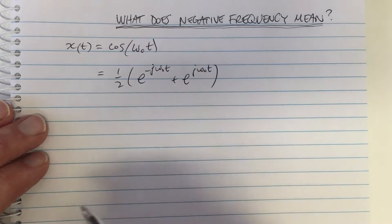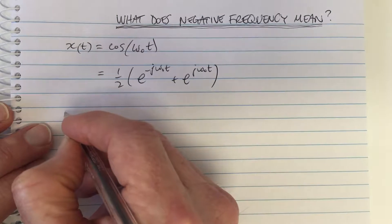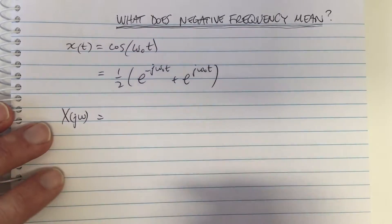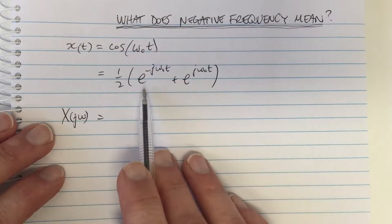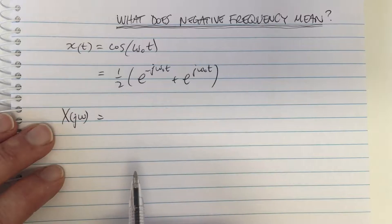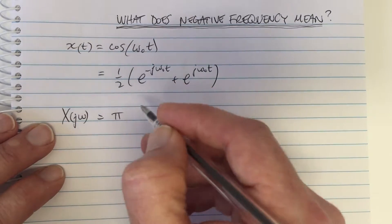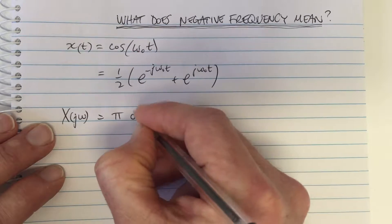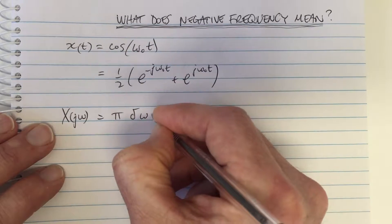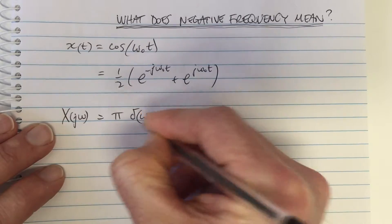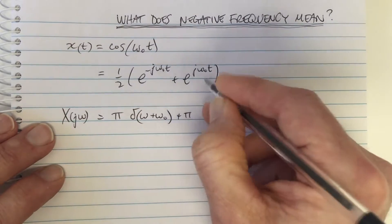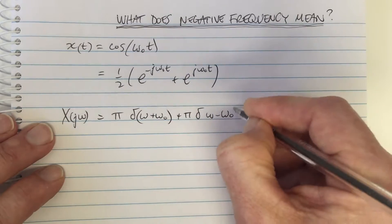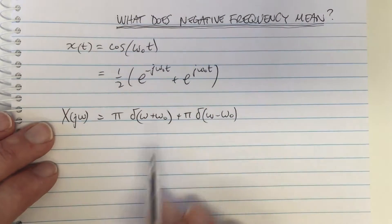And you can look up Fourier transform tables to find out that the Fourier transform of this waveform has two terms, and they correspond to these two complex exponentials. And it equals pi, and corresponding to this one here is delta of omega plus omega 0. And there's another term that corresponds to this one, which is delta omega minus omega 0. This is the Fourier transform.